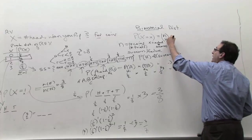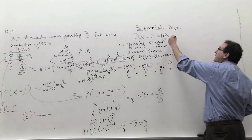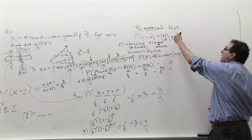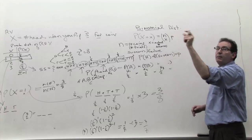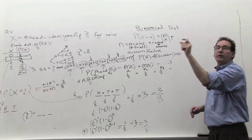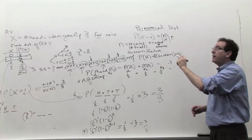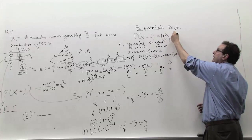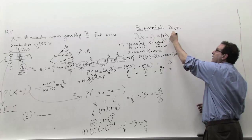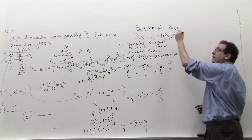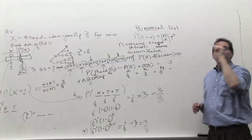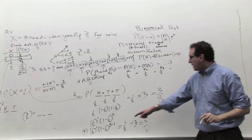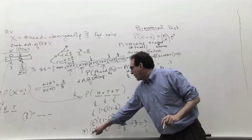We want the chance of a head. Each head times head times head is p times p times p. So how many heads are there? There are x heads. So p to what power? P to the x power. This p to the x power corresponds to one head in our example.